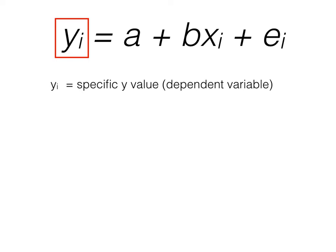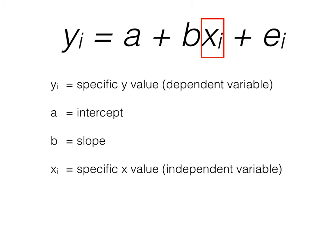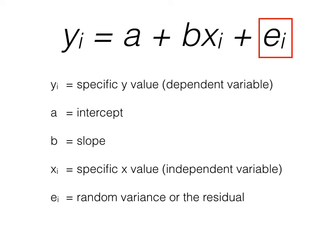yi refers to a specific y-value, or your dependent variable. a refers to the intercept of your model, or where on the y-axis your line hits when x is zero. b is the slope, or the change in y for one change in x. xi is a specific x-value, or your independent variable. ei is the random variance, or the residual, for a specific data point.